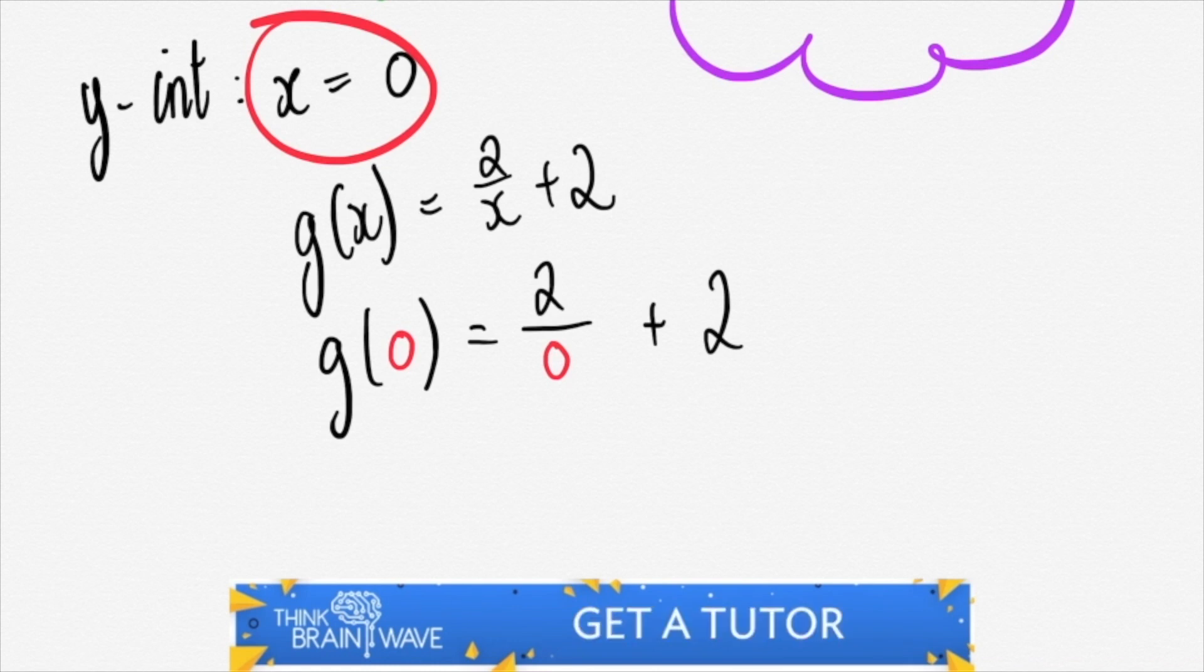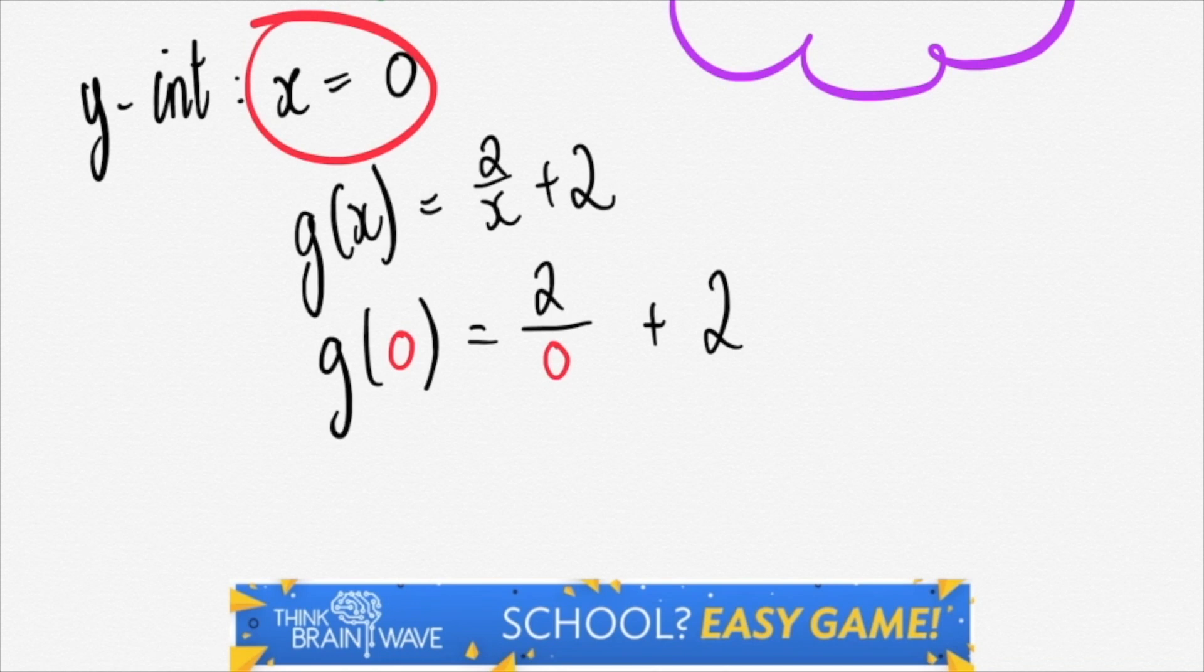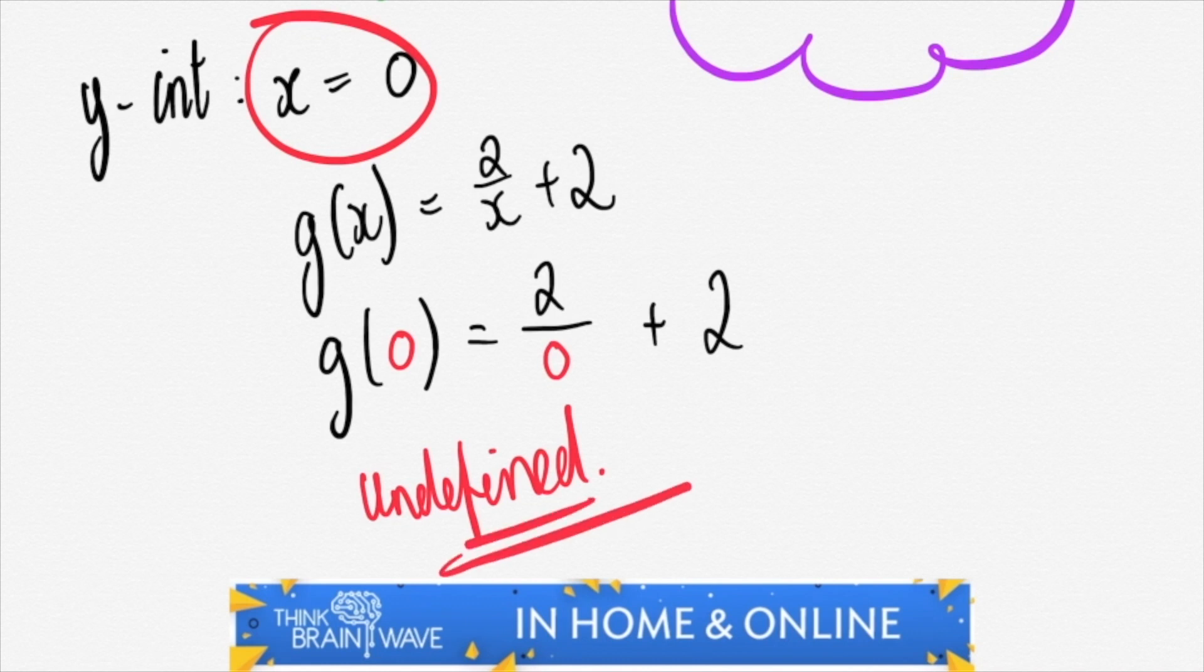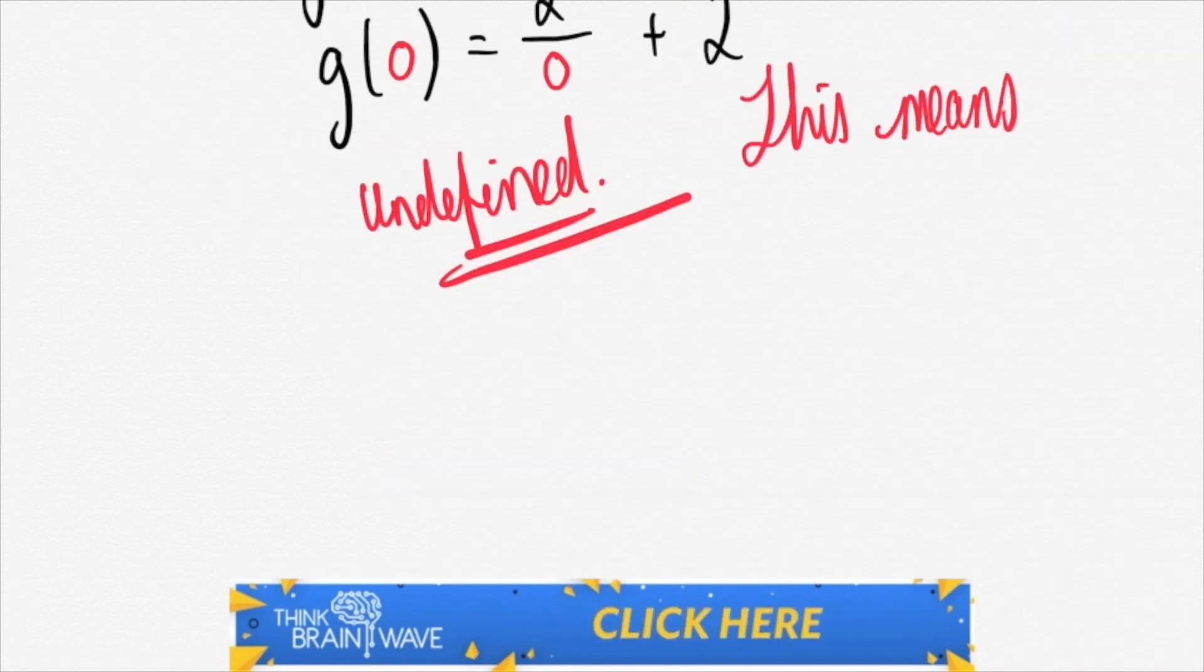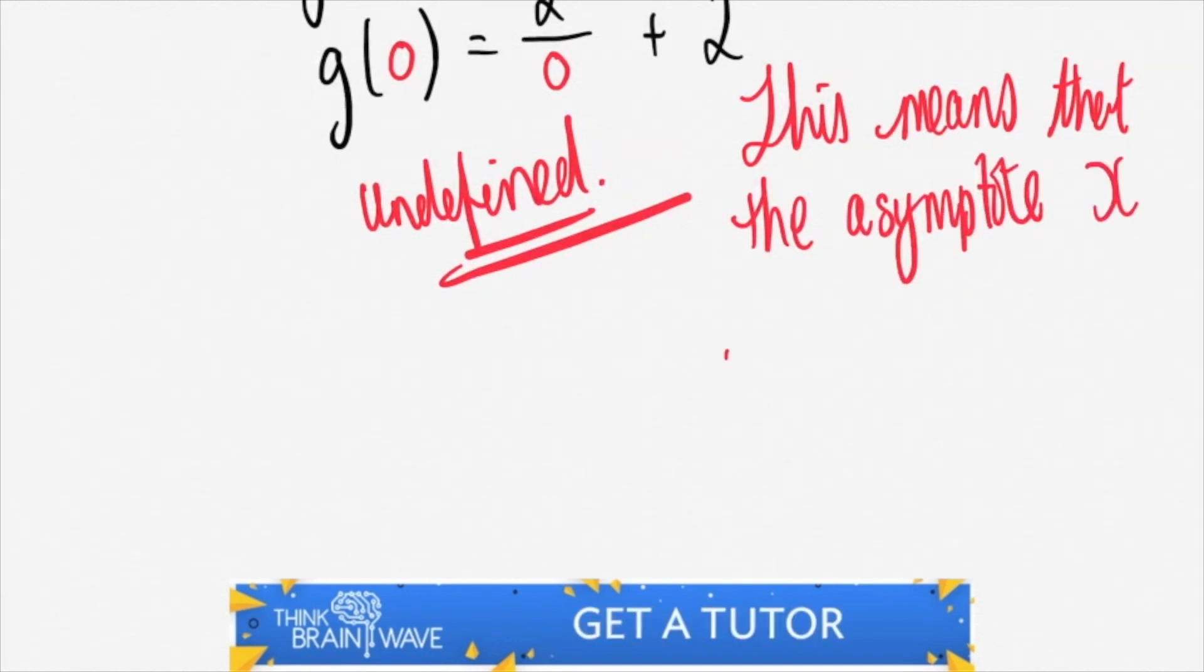And therefore we will not have a y-intercept. So we say it's undefined. And this means that there is an asymptote at this point.